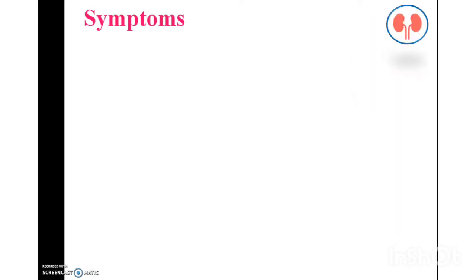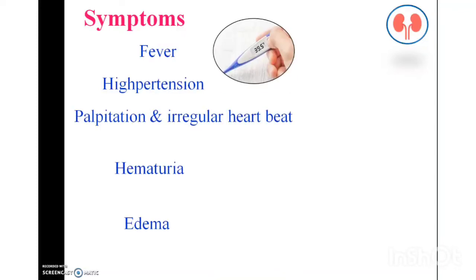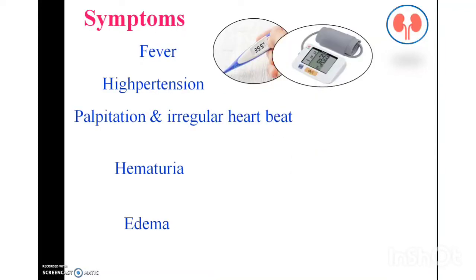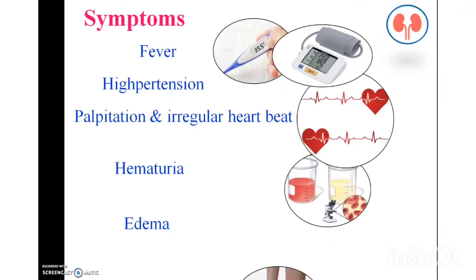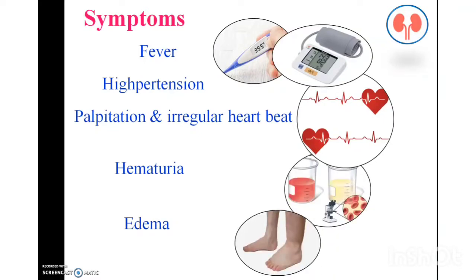Moving on to the symptoms: fever, hypertension, palpitation and irregular heartbeat, hematuria, and edema. Fever is an increased level of body temperature above 98.4 degrees Fahrenheit or 37 degrees centigrade. Hypertension is increased level of blood pressure. Hematuria is blood in urine. Edema is the accumulation of fluids in the tissues.